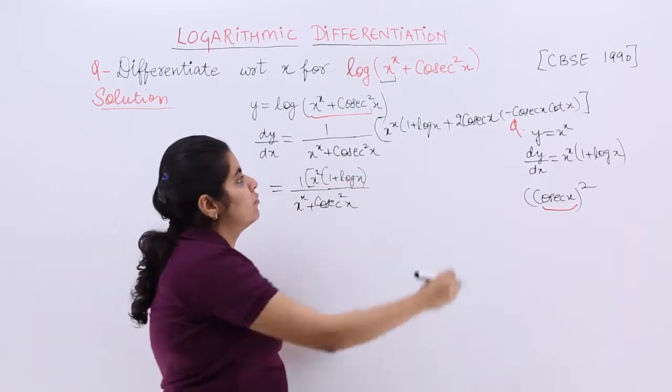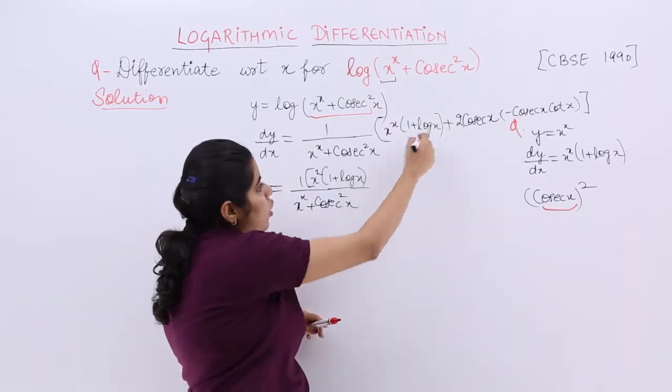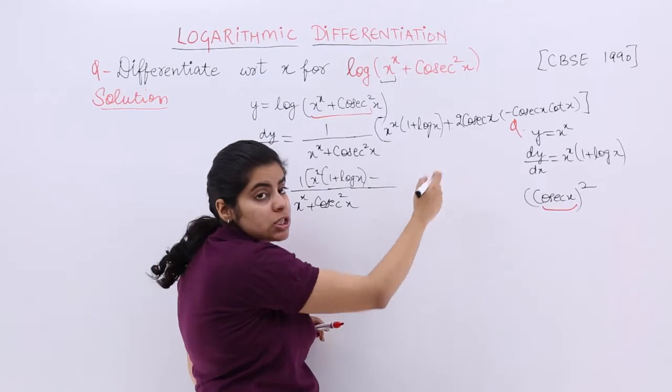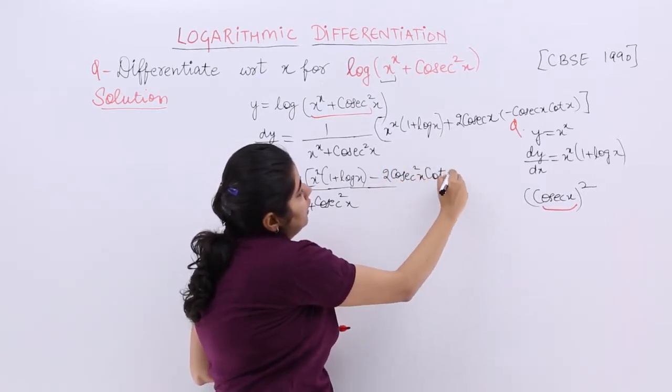x^x(1 + log x), the answer to this. Then we have plus or and multiply. So it is -2 cosec²x cot x.